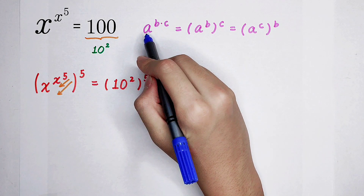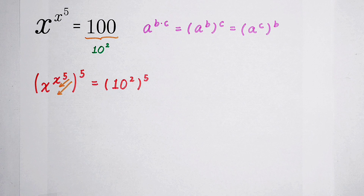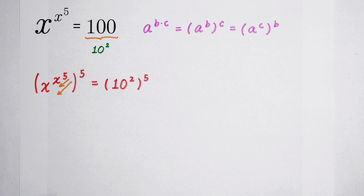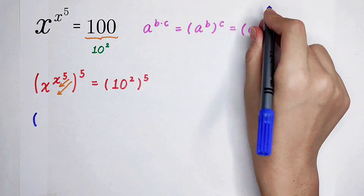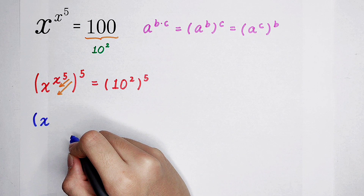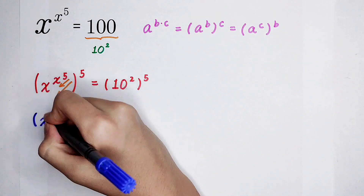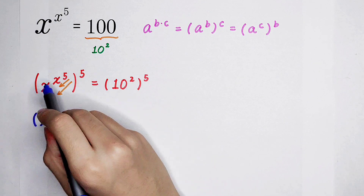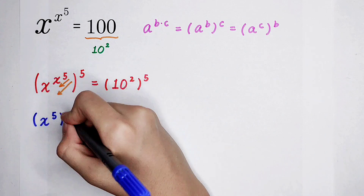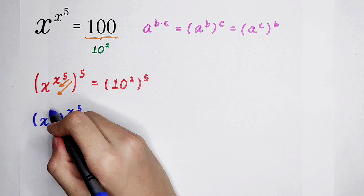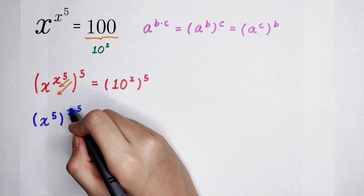So it is equal to a to the power of b times c. Or you can write it directly as a to the power of c, and then all to the power of b. Let's do it: it is a to the power of c — a is this x, the base. And c is this 5, giving x to the power of 5. The big exponent is c, which is x to the power of 5. So now you can see that our base and our exponent are the same: x to the power of 5.